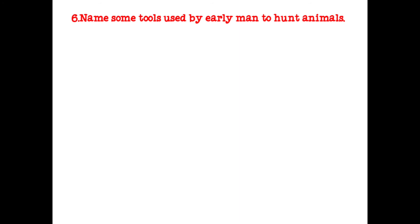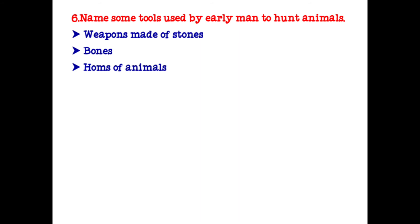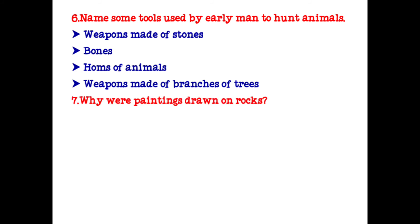Name some tools used by early man to hunt animals. Weapons made of stones, bones, horns of animals, and weapons made from branches of trees — these are the tools used by early man to hunt animals.